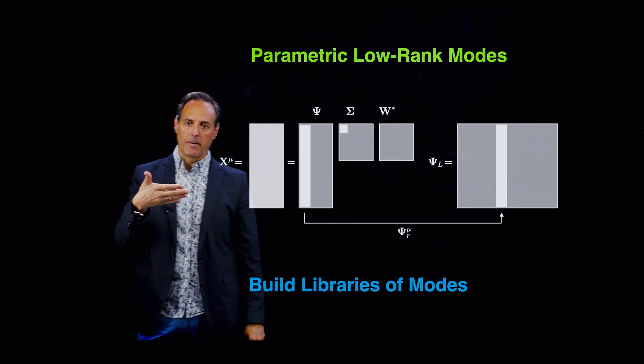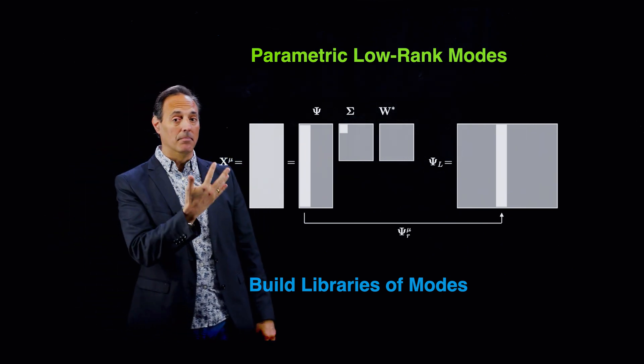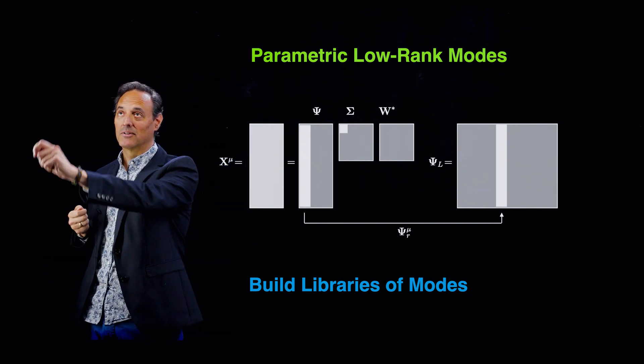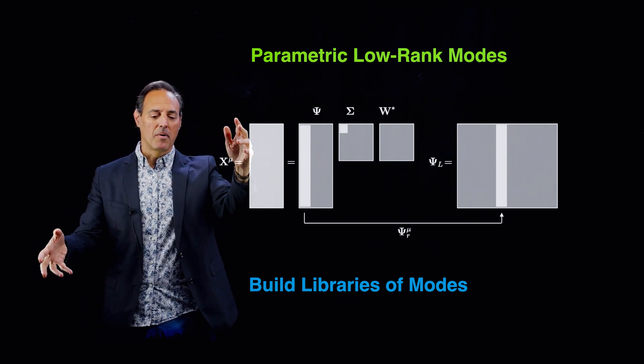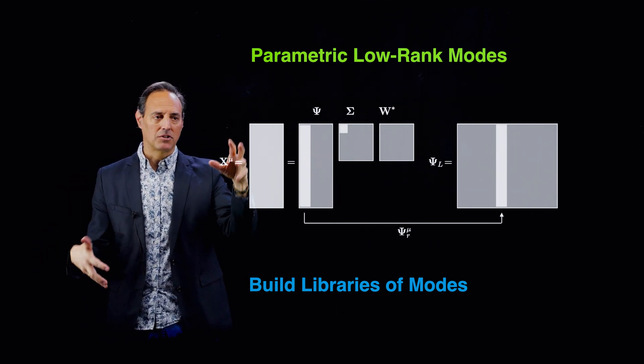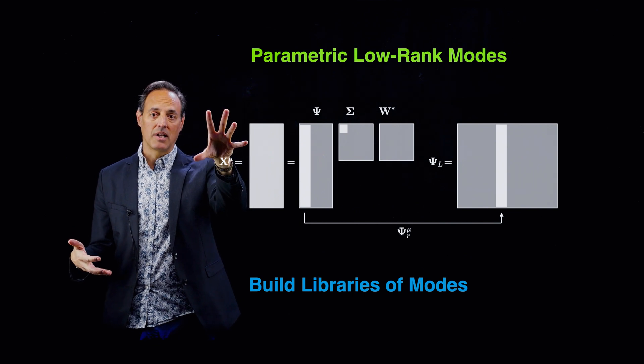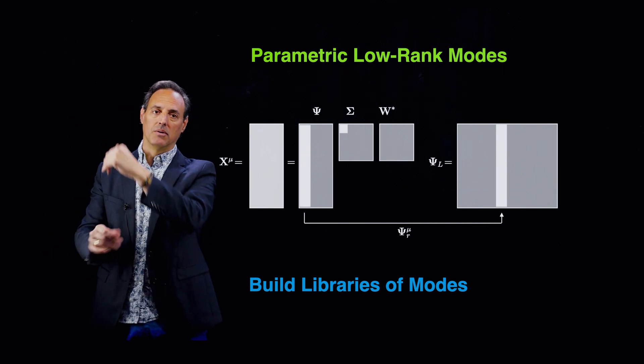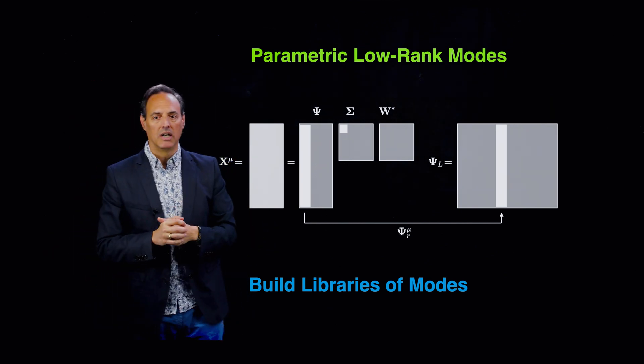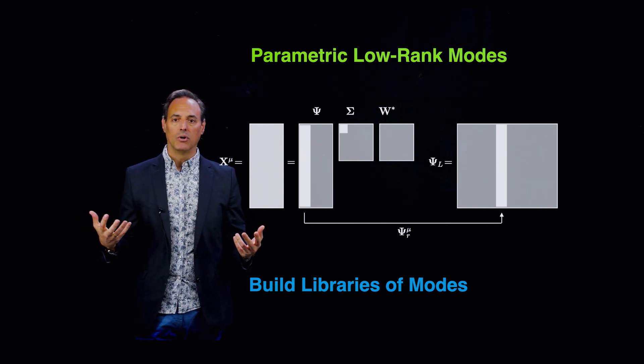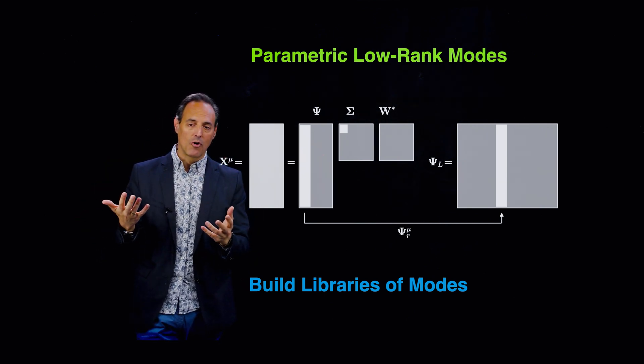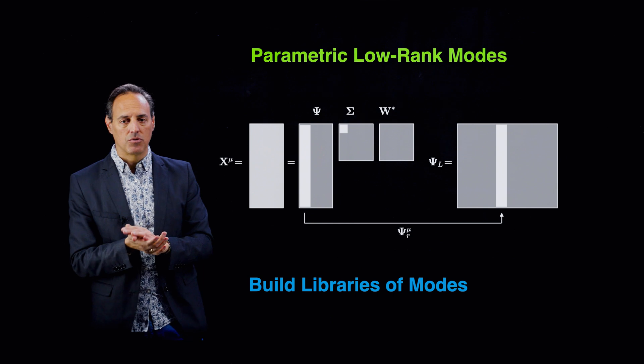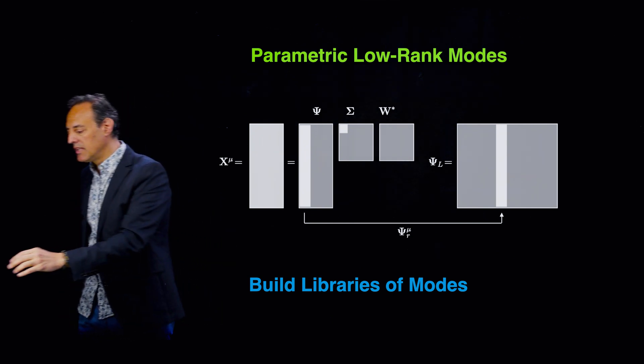Because normally what happens with parametric variability is the parameter might be wandering around in time. It starts here in this domain and wanders to this domain and then later on it wanders to this domain. Part of what you could imagine doing is if I have this library structure, while I'm here I use the modes that I learned from here. When I get over to here, I use those modes. When I get over to here, I use these modes. So the idea is to recycle what you've done. If you've already learned these modes and you've already learned how to interpolate the non-linearity, don't redo that work. You already have it. Build a library, learn how to use it there.